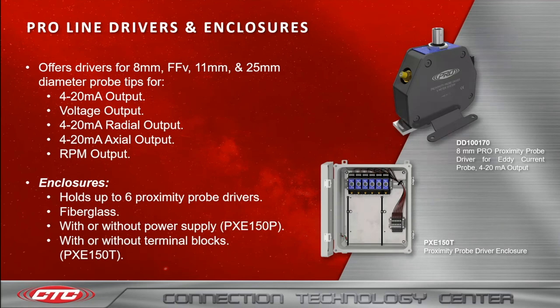As for our ProLine drivers and enclosures, we offer drivers for 8 mm, 11 mm, and 25 mm probe tips. All are used for 4–20 mA output, voltage output, 4–20 mA radial output, 4–20 mA axial output, and also RPM output.